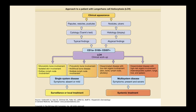This algorithm shows how LCH can appear clinically and how it's worked up — this is really how it's classified now: single system, multi-system, disseminated, non-disseminated, and then treatment. Treatment won't be on the USMLE, but for reference it's typically vinblastine and prednisone for multi-systemic involvement.